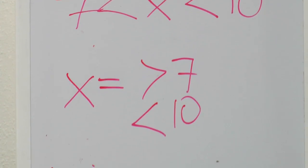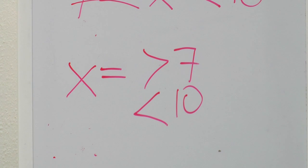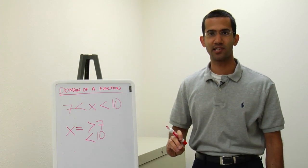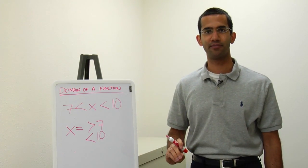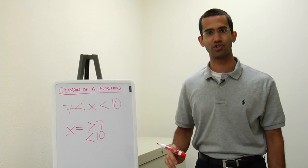Also the denominator of a fraction cannot be zero when calculating the domain of a function and all values under the square root must be positive when calculating the domain of the function. So these are some examples and the definition of the domain of a function.